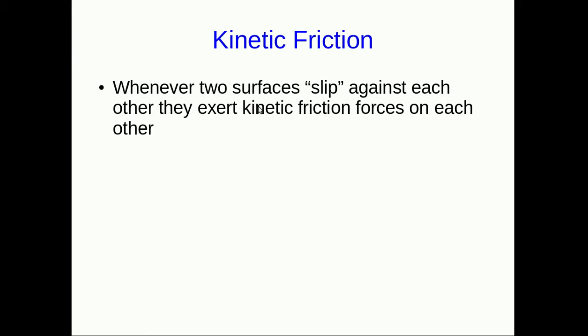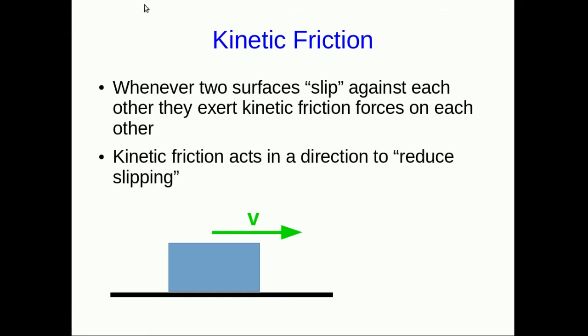Whenever two objects are in contact and they're slipping against each other, they'll each exert a kinetic friction on the other. This kinetic friction will act in a direction that reduces the slipping. You may have learned that kinetic friction always opposes the motion, and in simple cases it does, but we'll see that's not really accurate. Let's start with a simple case. If we just have a box sliding to the right across the floor, it's slipping on the floor, so there will be a kinetic friction. The box is only in contact with the floor. There will be a long-range weight force due to the earth, a normal force up due to the floor. To reduce the slipping in this case means slowing the box down. So the kinetic friction will act in the opposite direction to the velocity of the box.